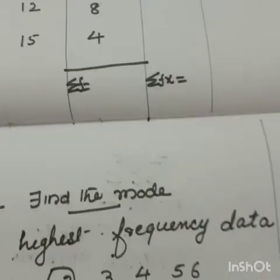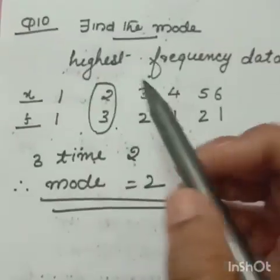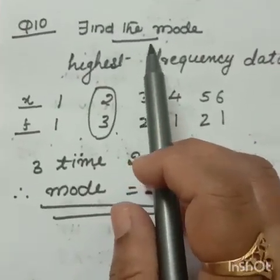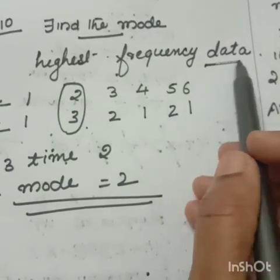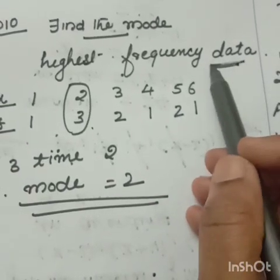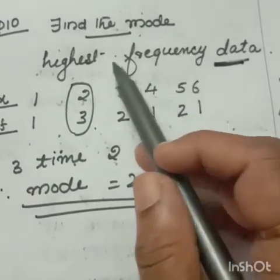Like that one another example. Find the mode. Mode. What is the meaning of mode? Highest frequency data is called mode. Data only we are calling mode. Not frequency.